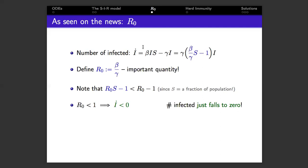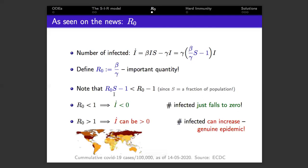However, if R₀ is larger than one, then the combination R₀S minus one, which appears in our equation, can be either negative or positive. Which means the number of infected can both decrease and increase. And in this case, we have a genuine epidemic. This is the situation that we find ourselves in with COVID-19.